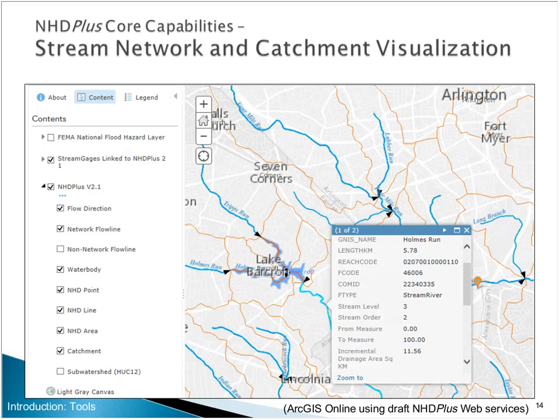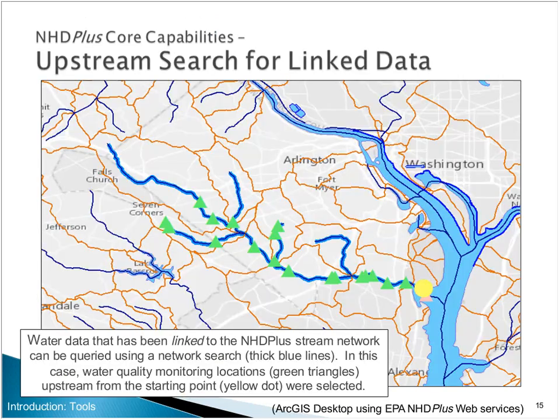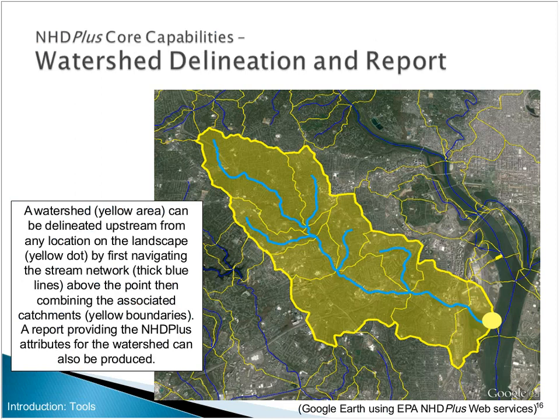Here's an example of an ArcGIS Online web map showing catchments in orange and NHDPlus flow lines in blue, with arrowheads showing the direction of flow. Here's a desktop ArcGIS session accessing EPA web services to identify the outlet — shown in yellow — of an upstream search for water quality monitoring locations. And here is a Google Earth display using a web service to do watershed delineation: you start at the yellow dot, identify the network components upstream, and then aggregate the local drainage area.